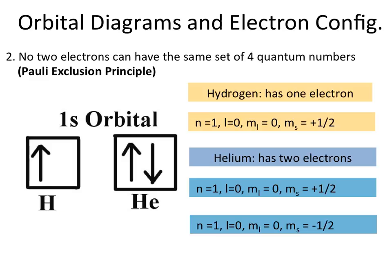For a hydrogen atom with a single electron, the quantum numbers are: n=1, l=0 because that corresponds to an s orbital, m_l=0 because the s orbital is spherical so there's no directionality, and m_s = +1/2. That's by convention — we start with the spin-up electron, shown as an arrow pointing up.